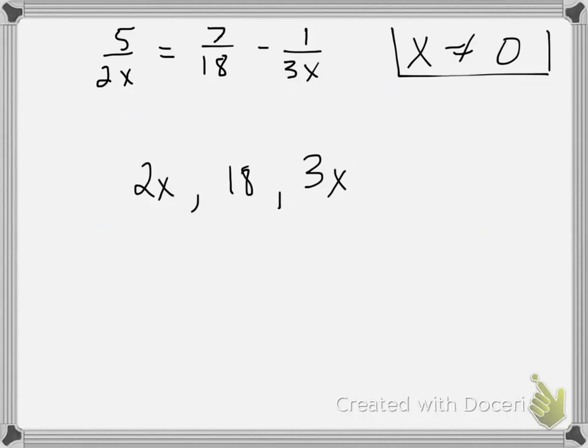And so here I have a 2, an 18, and a 3. What would be my least common multiple there? Well, I could multiply 2 times 3 or 2 times 18, but my eyes are drawn to the number 18. Why? Because, of course, 18 divides into 18 one time, 2 divides into 18, and 3 divides into 18. So I know that 18 is the number I'm going to multiply every fraction by.